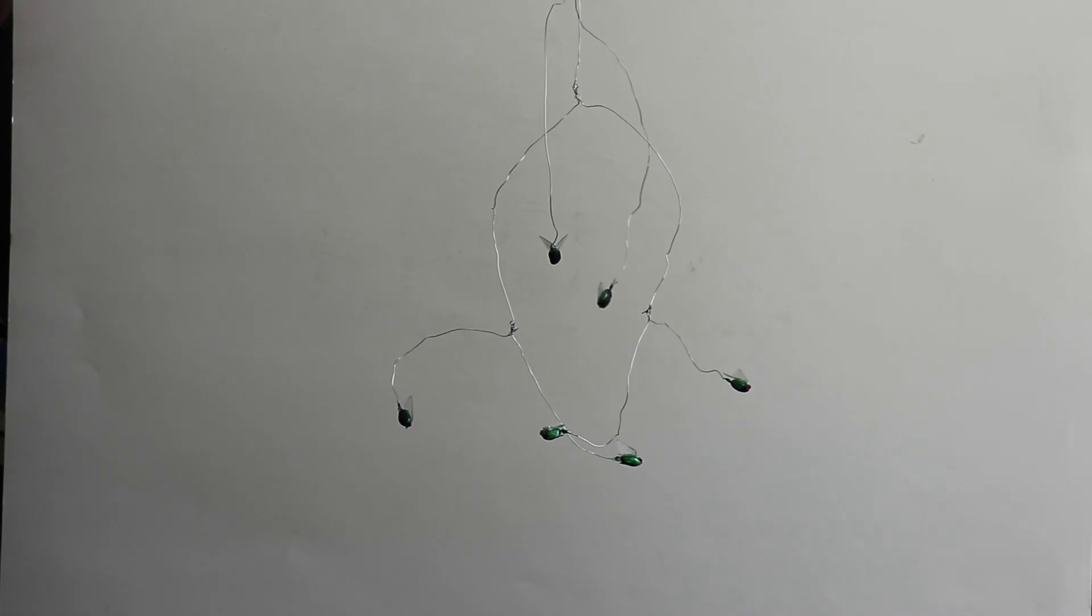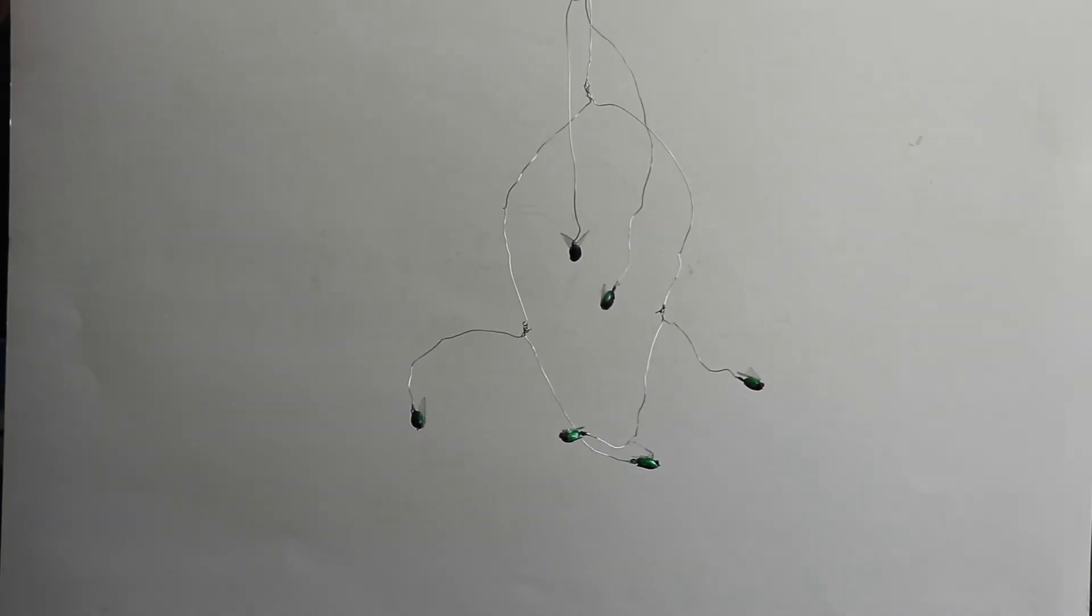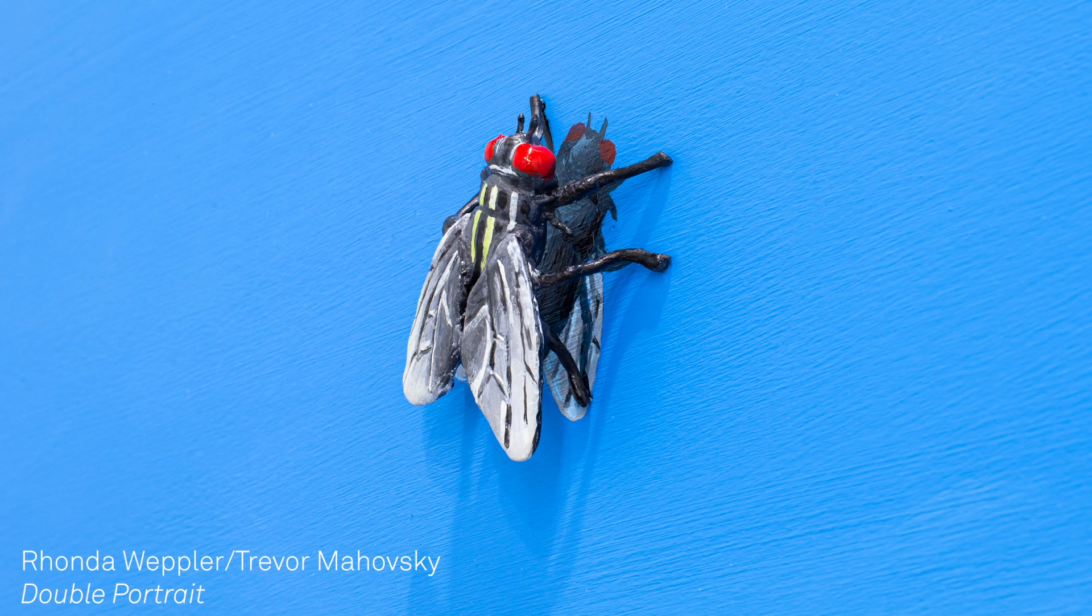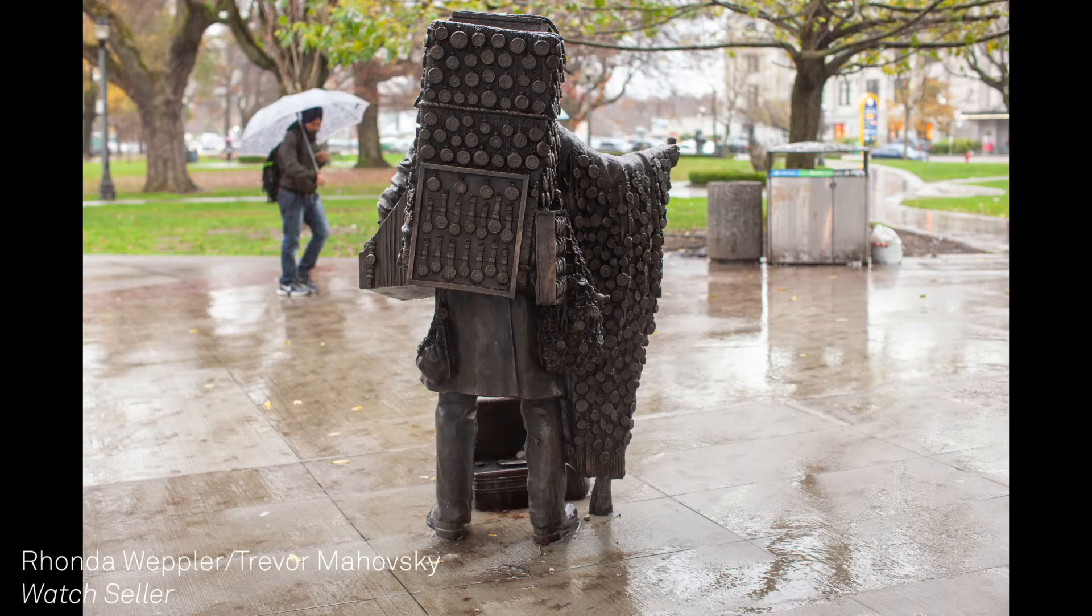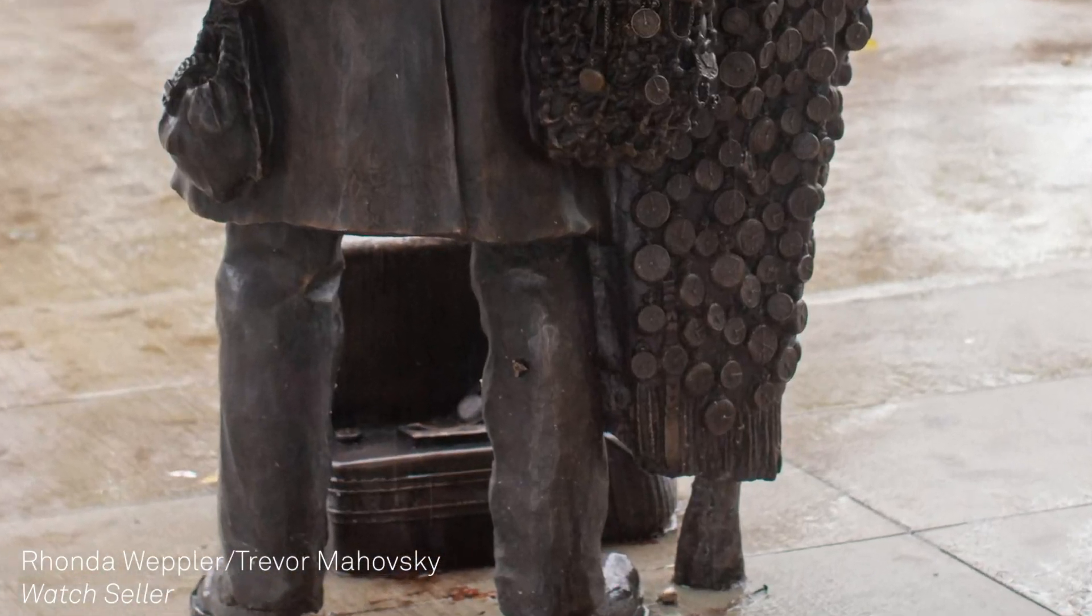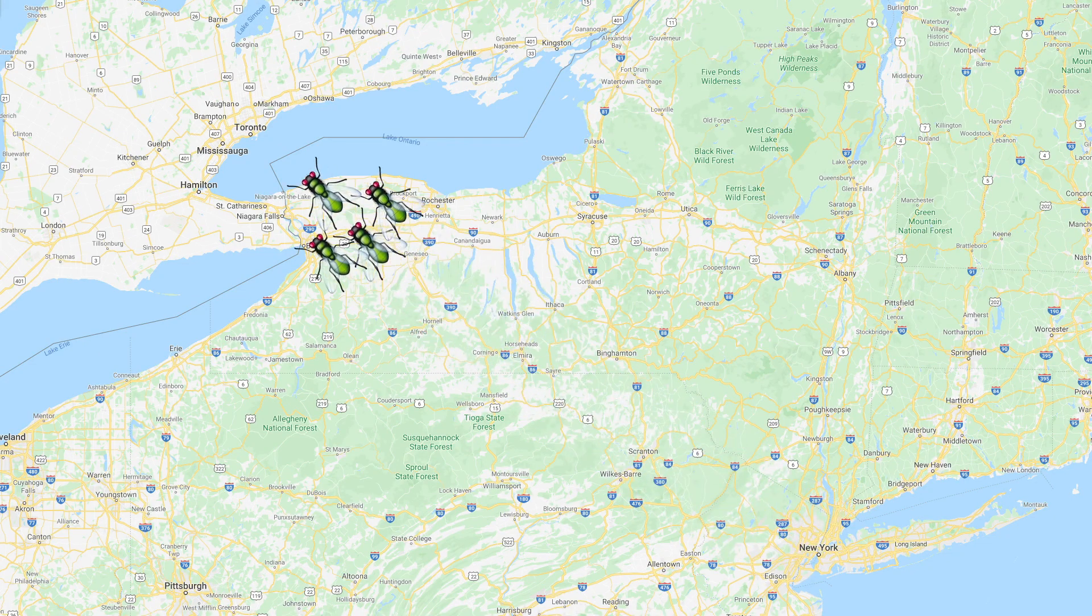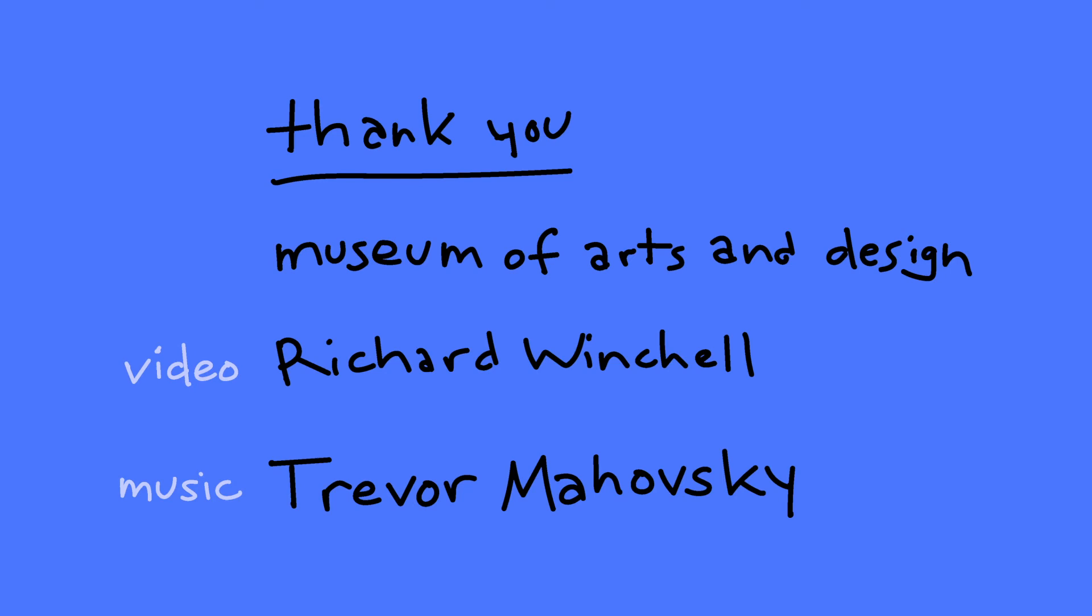These flies are going to my collaborative partner Trevor. We sometimes use flies to represent ourselves in our work like this sculpture called Double Portrait, and like this hidden fly on the back of this bronze sculpture that we made together. He lives in Toronto, Ontario, Canada. Well, thanks for watching. Next time we'll be making pistachio spoons. Stay safe out there!